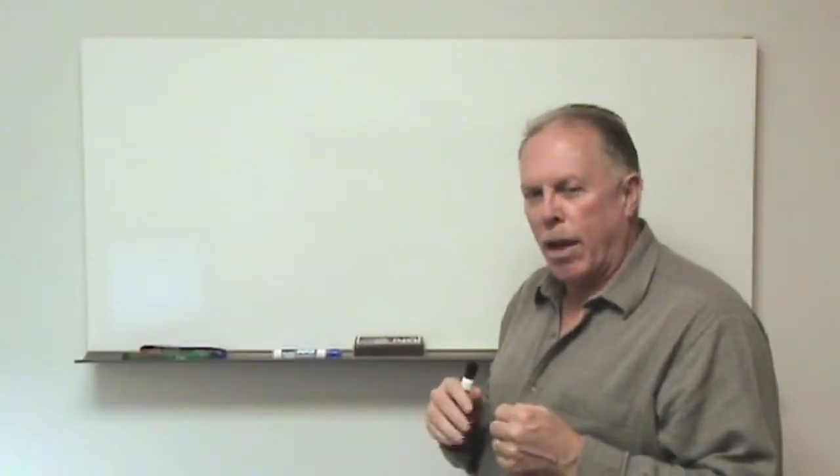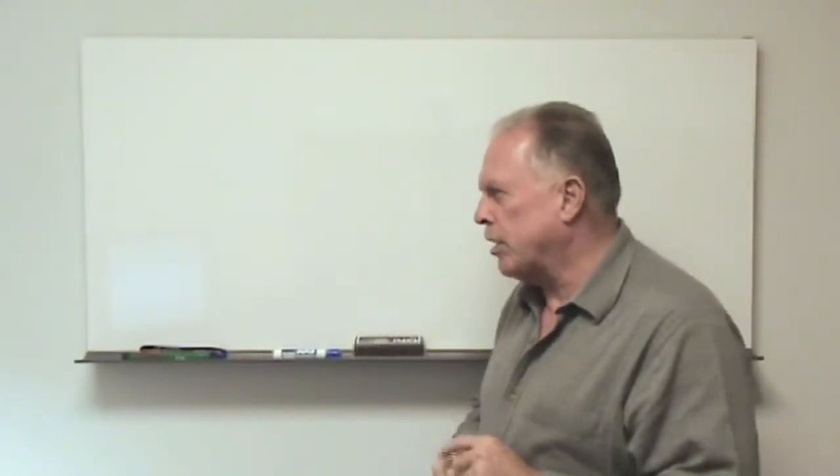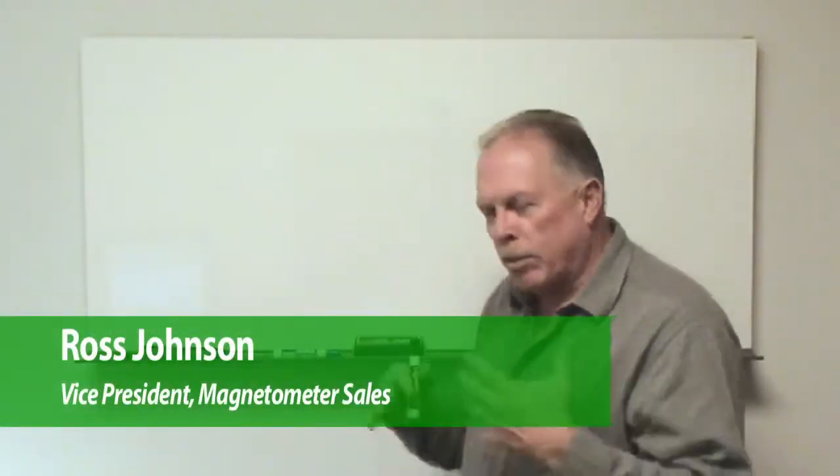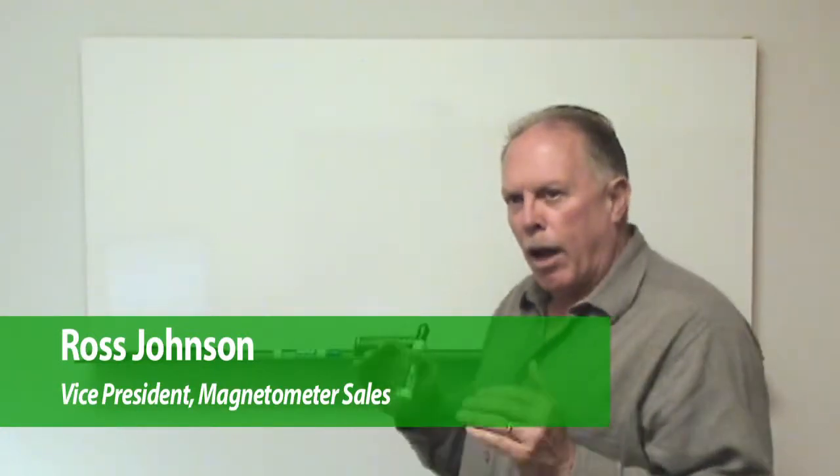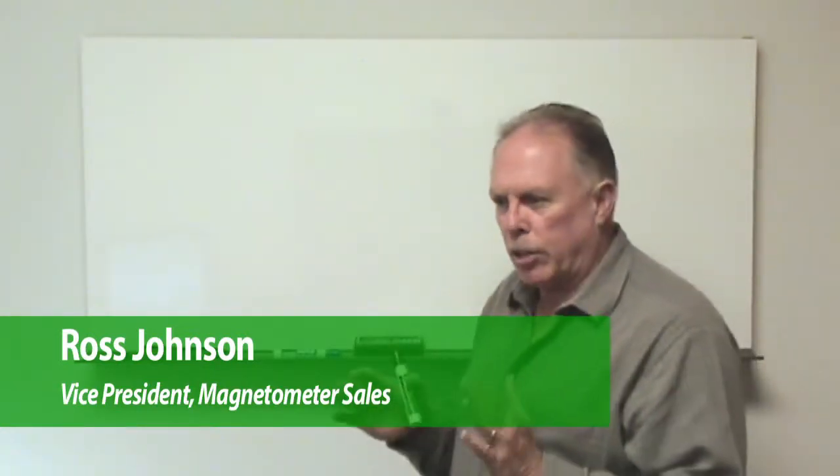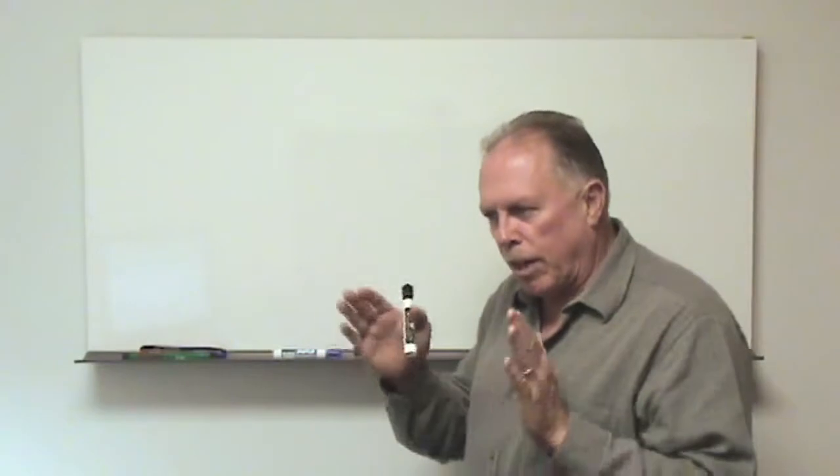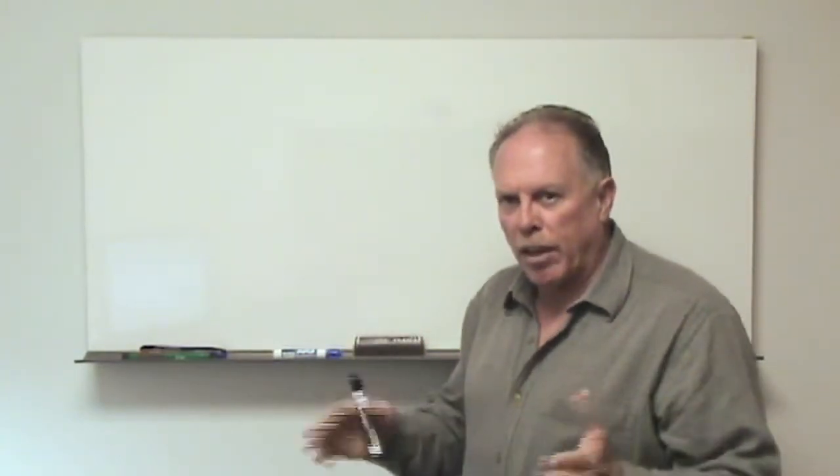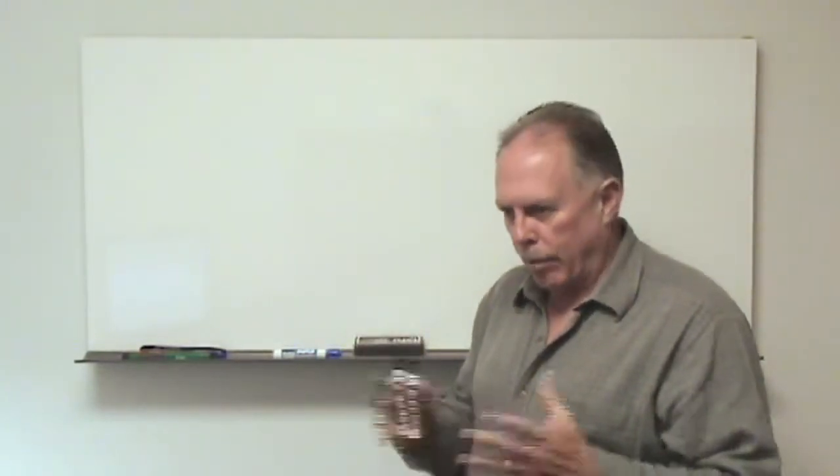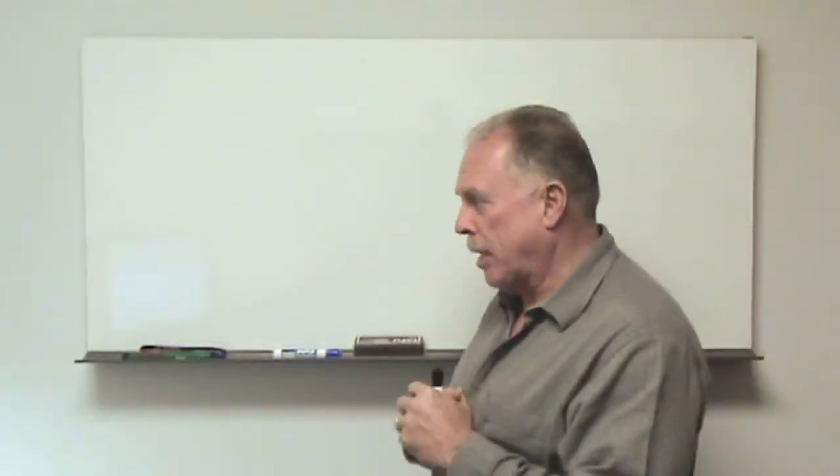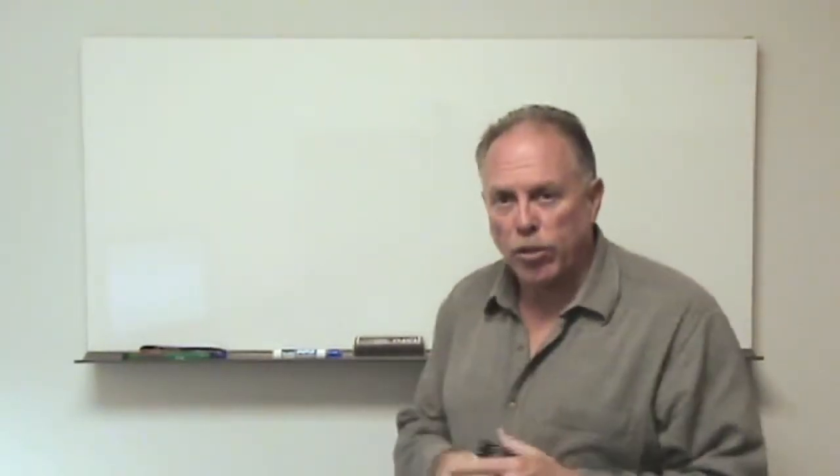Today we're going to have the fifth and final video in the series and we're going to discuss specifically how we use the magnetometer to configure a survey to find a target of a given size, and then that will inform us about the line spacing for our survey grid.